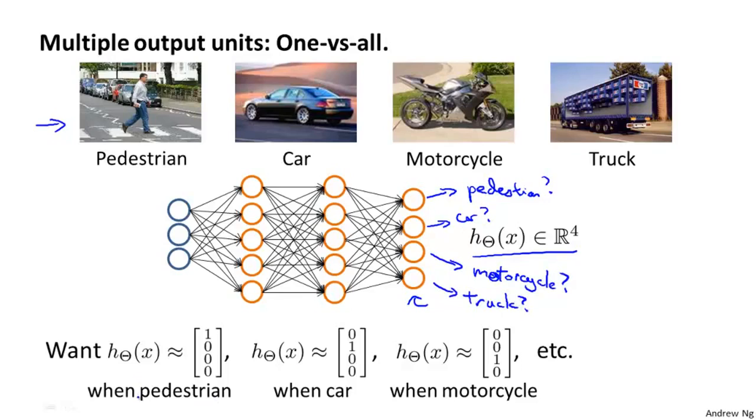And thus, when the image is of a pedestrian, we would ideally want the network to output 1000. When it's a car, we want it to output 0100. When it's a motorcycle, we get it to, or rather we want it to output 0010, and so on.